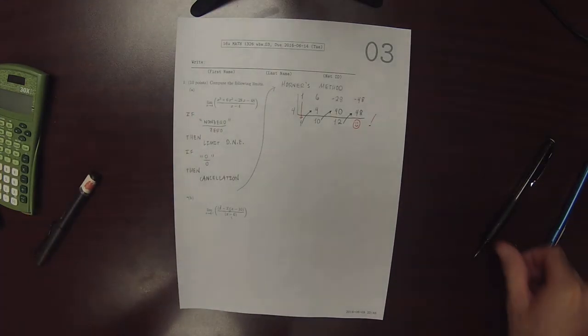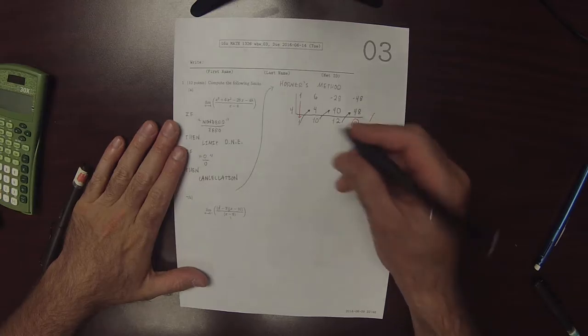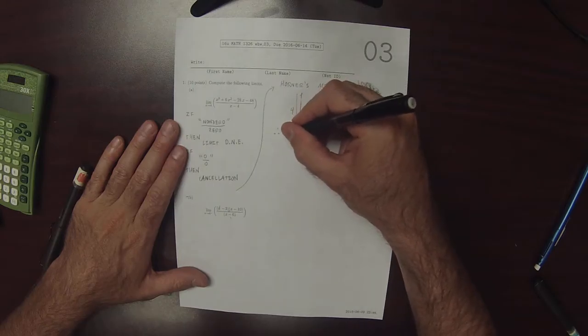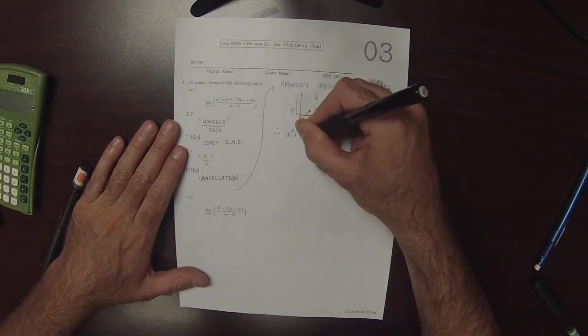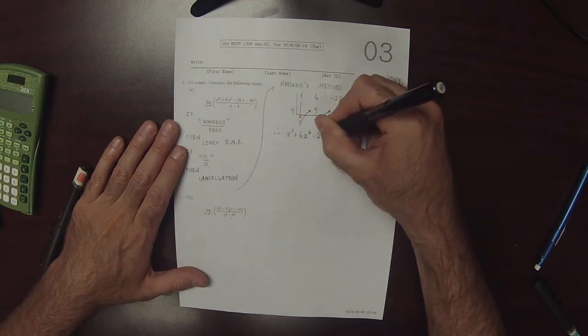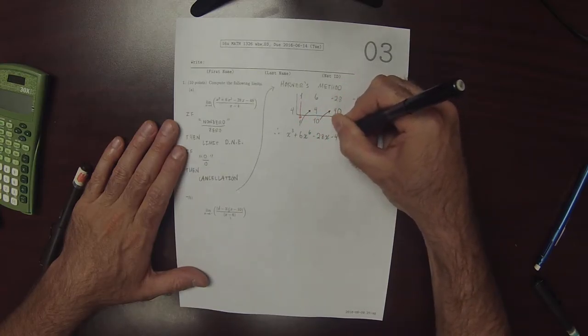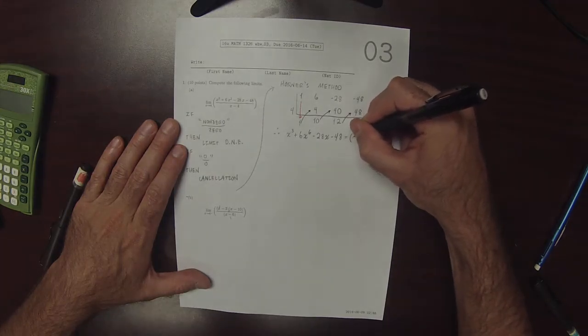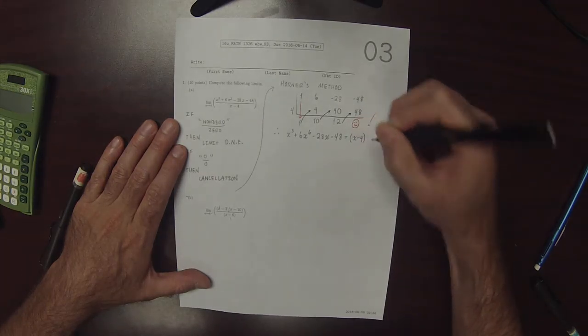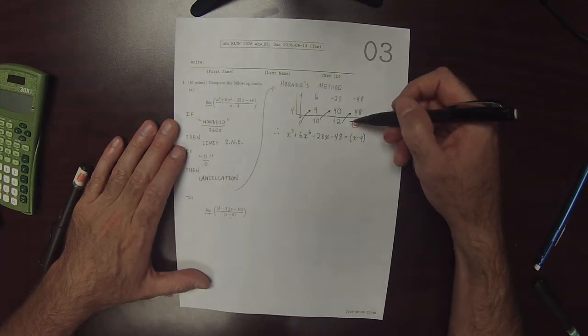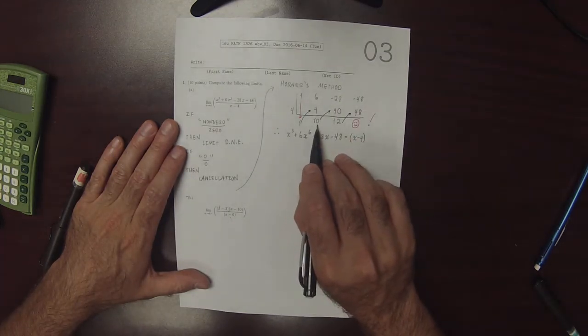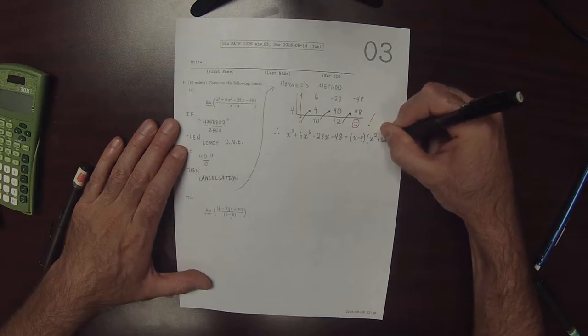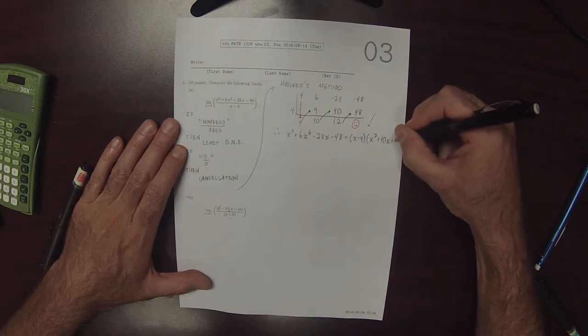So that's telling us, as a result of that 0 right there, that x cubed plus 6x squared minus 28x minus 48 actually factors. And x minus 4 is one of the factors. So x minus 4 is a factor. And Horner's method also tells us what the other factor is from these numbers.